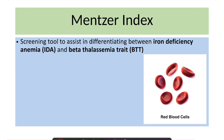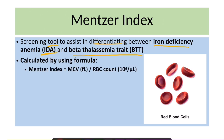Today we'll discuss the Mentzer Index. It is a screening tool used in differentiating between iron deficiency anemia and the beta thalassemia trait. It is calculated using the formula: MCV divided by RBC count.